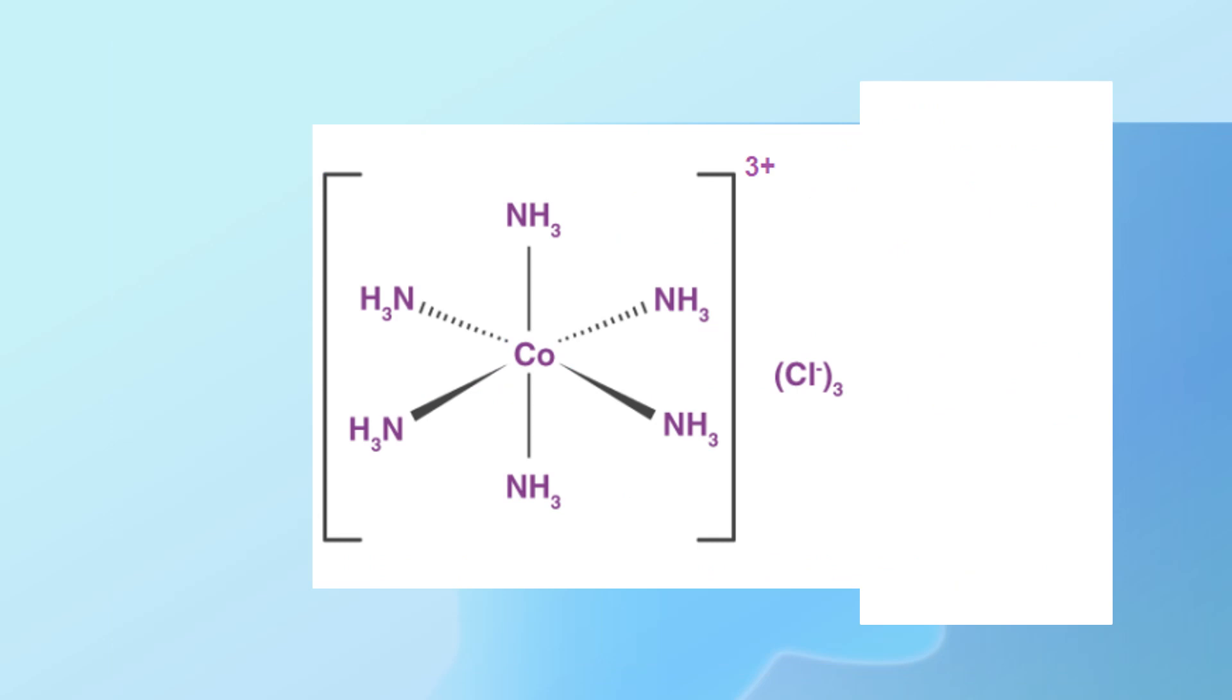Coordination number refers to the number of coordinate bonds formed between the central metal and the ligands. It defines how many ligands can attach to the central metal atom or ion.